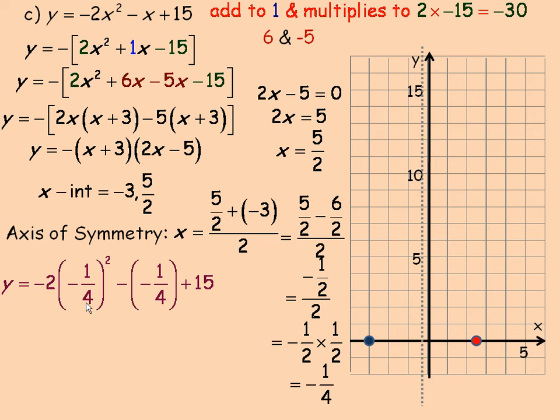Now, negative 1 quarter squared is negative 1 quarter times negative 1 quarter. Now, when we square negative 1, we get positive 1 in the numerator, and when we square 4, we get 16 in the denominator. So this is actually 1 over 16.